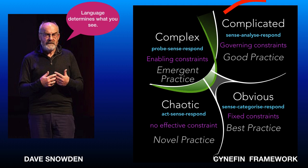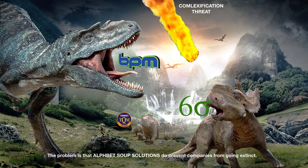For instance, you need something similar to a college degree to understand how SAP works. The problem is that alphabet soup solutions do not prevent companies from going extinct.